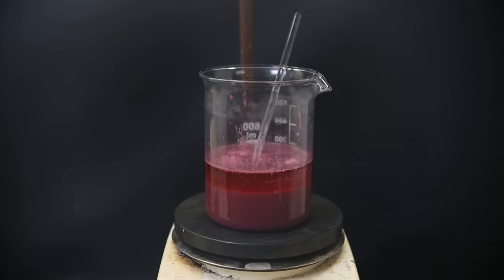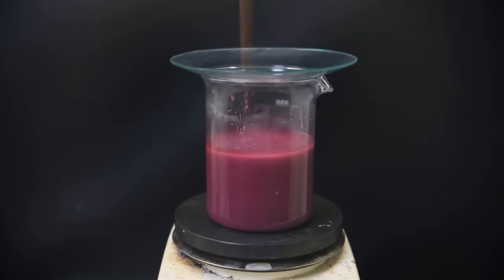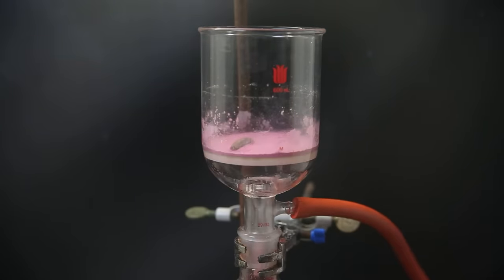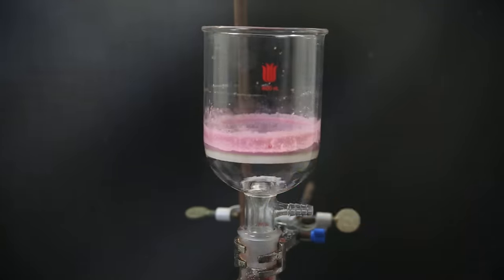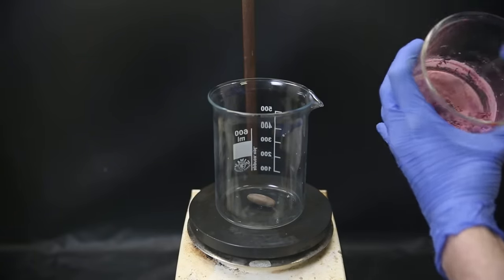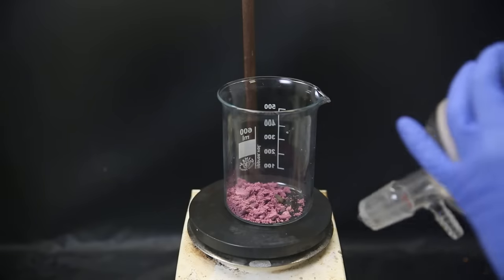I move it all to a beaker. I wash out the flask with more acid and then let the mixture stir for a few hours to make sure everything has reacted. I then vacuum filter it all through a glass frit to collect the pink solid and wash it with some water. I then scrape off all of the solids from the filter and move it to a beaker.